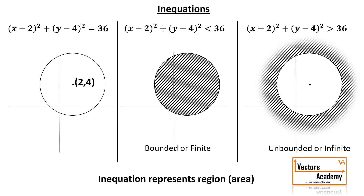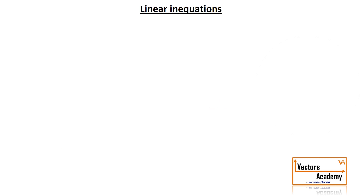Luckily for you, we don't have many shapes in this chapter. We just have one shape, that is a line — no circle, no parabola, no ellipse, just a straight line. Now let us see how to solve this inequation.